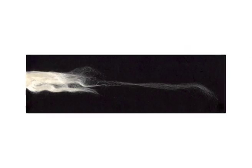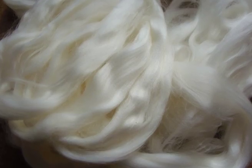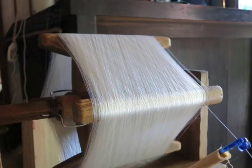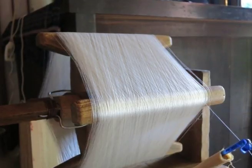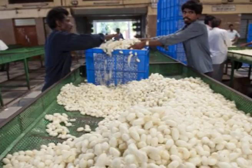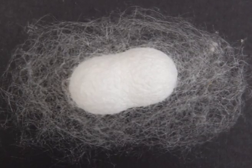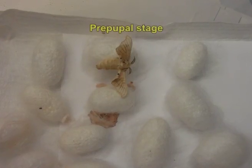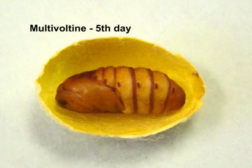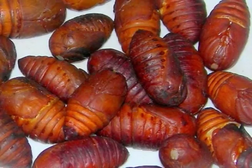Let us learn about the harvesting of cocoon. The cocoon is made of a thread of raw silk from 300 to about 900 meters (1000 to 3000 feet) long. The fibers are very fine, about 10 micrometers in diameter. About 2000 to 3000 cocoons are required to make a pound of silk (approximately 0.4 kg). At least 70 million pounds of raw silk are produced each year, requiring nearly 10 billion pounds of cocoons. The silkworms complete spinning in 2 to 3 days, but the cocoons should not be harvested at this time as the worms inside are still in the pre-pupal stage. Harvesting should be done on the fifth day for multivoltine races and on the seventh day for uni- and bivoltine races, when the pupae are fully formed and hard.